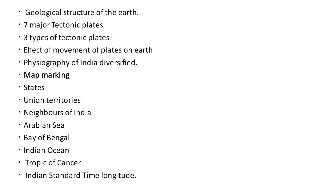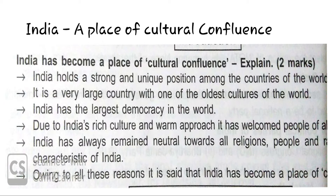Let us discuss in detail. A quick overview: India is a place of cultural confluence. India holds a strong and unique position among the countries of the world. It is a very large country with one of the oldest cultures of the world. India has the largest democracy in the world. Due to India's rich culture and warm approach, it has welcomed people of all religions and races. India has always remained neutral towards all religions, people and races. This is a unique characteristic of India. Owing to all these reasons, it is said that India has become a place of cultural confluence.